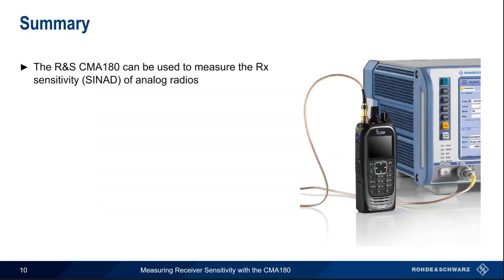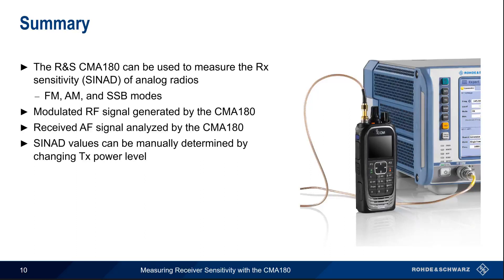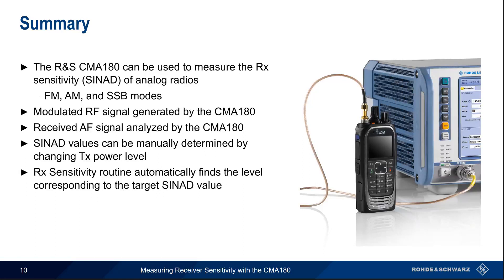In summary, the Rohde & Schwarz CMA-180 can measure the receiver sensitivity of analog radios by means of standard SINAD measurements, and this can be done in FM, AM, as well as single sideband modes. The CMA-180 generates a modulated RF signal, which is then received and demodulated by the radio under test. The audio output of the radio is routed back into the CMA-180, where audio analysis is used to calculate SINAD. Sensitivity is defined as the input RF level needed to produce a given SINAD, so the target SINAD value can be determined by manually increasing or decreasing the RF output level of the CMA-180. This process can, however, be automated using the RX Sensitivity routine, which automatically increases the output level until the target SINAD value is obtained. This concludes our presentation, Measuring Receiver Sensitivity with the CMA-180.